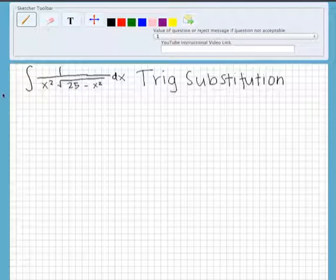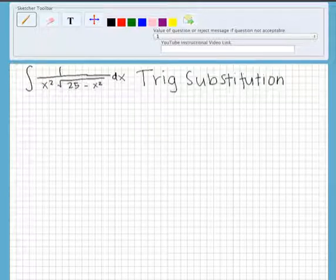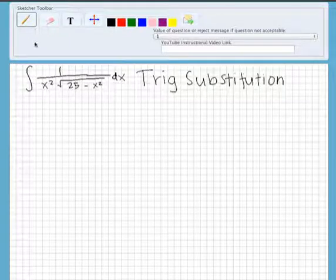So the first thing you need to do is find which trig substitution you will be using, and since we have 25 minus x squared, that's similar to a squared minus x squared.